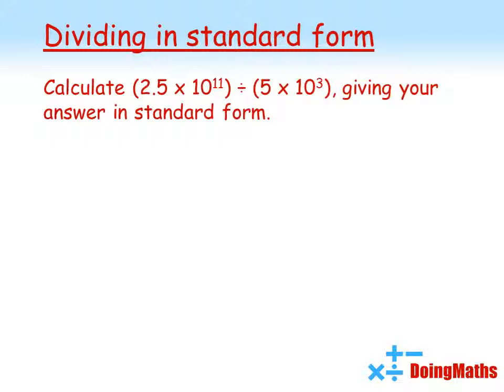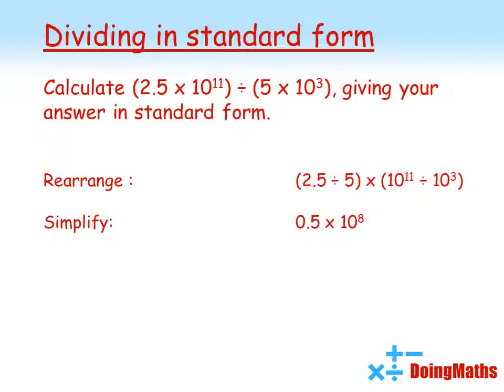Again, let's try a trickier version. So 2.5 times 10 to the 11 divided by 5 times 10 cubed. Again, we're going to give our answer in standard form. We start by rearranging: we do the 2.5 divided by 5 and the 10 to the 11 divided by 10 cubed, which gives us 0.5 times 10 to the power of 8.